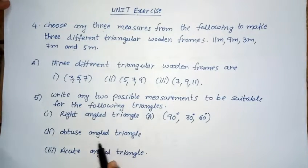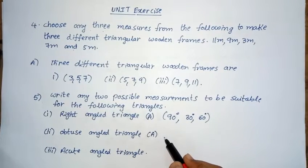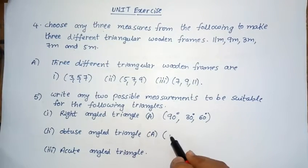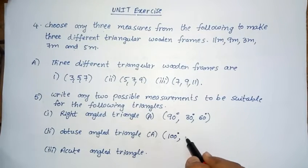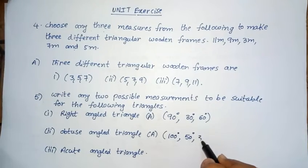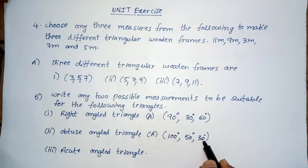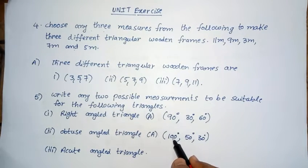Next one — obtuse angle triangle. In an obtuse angle triangle, one angle is greater than 90 degrees. So I am taking one angle equal to 100 degrees. The remaining two angles are 50 degrees and 30 degrees, because 50 plus 30 equals 80, and 80 plus 100 equals 180 degrees.